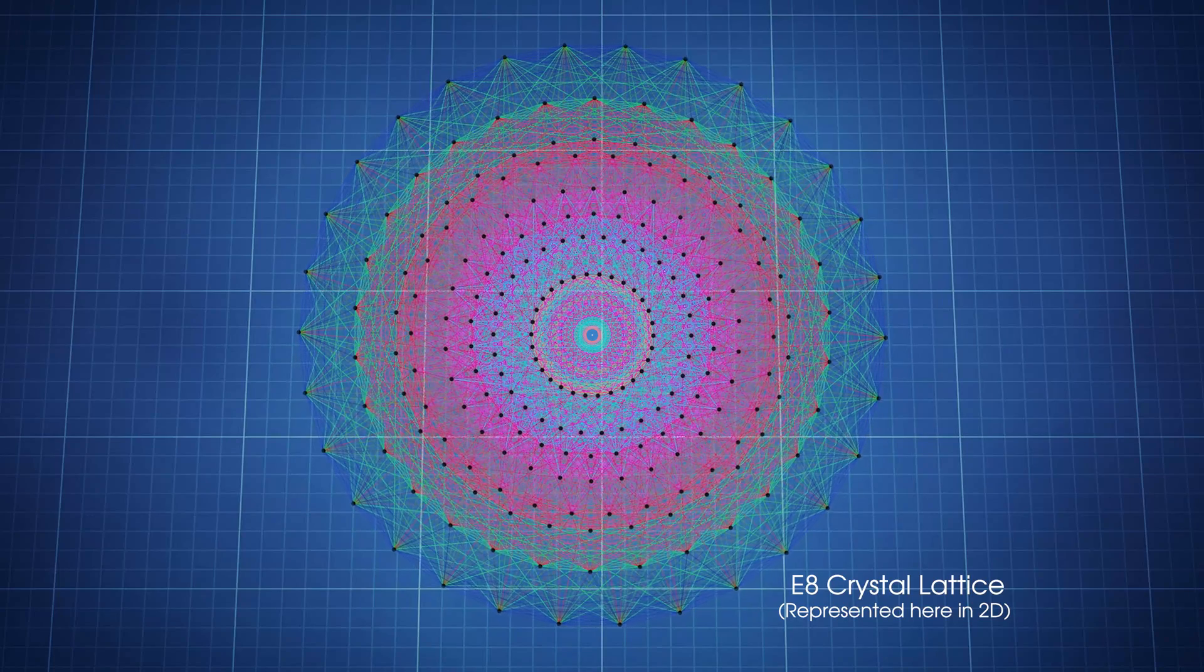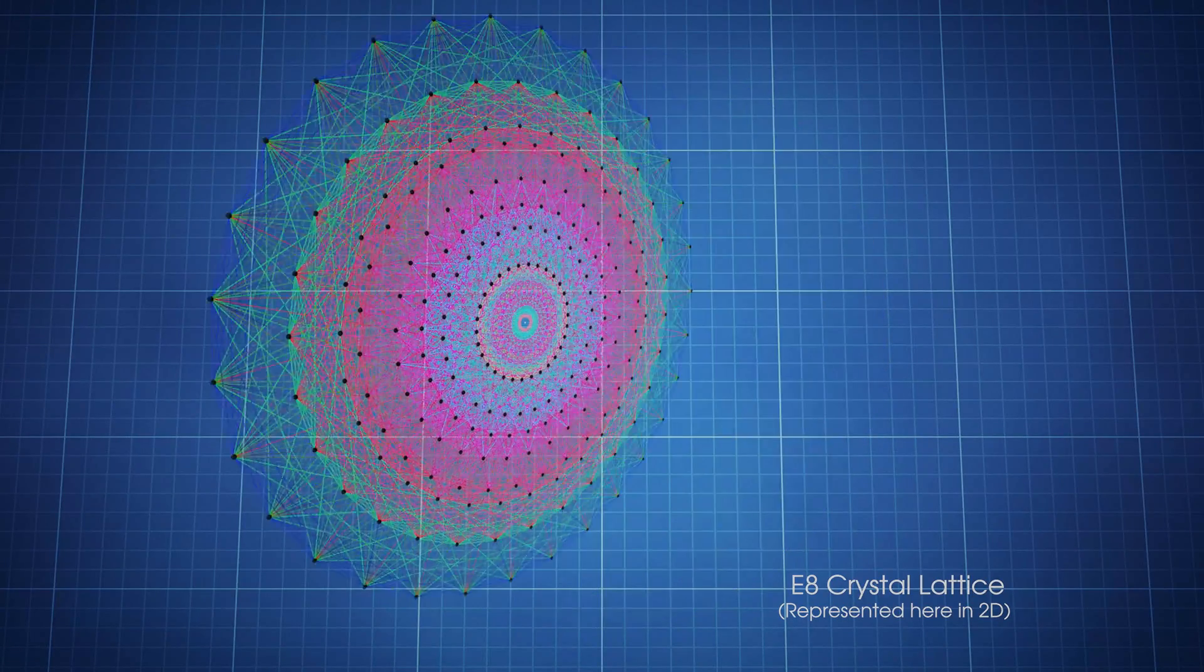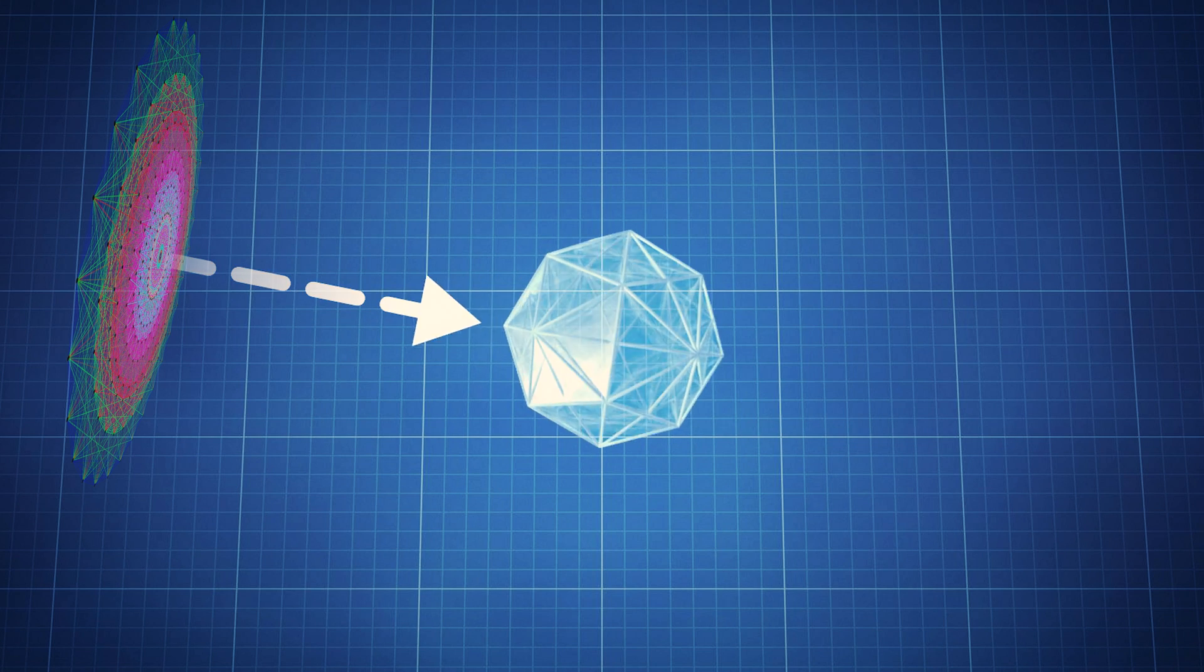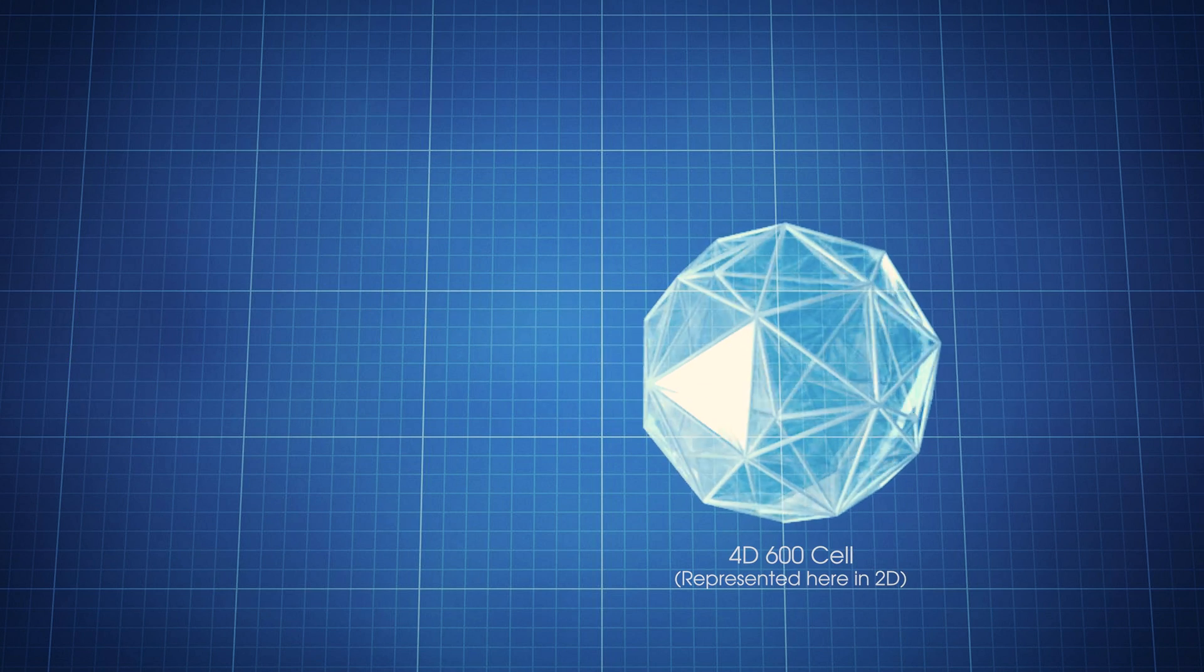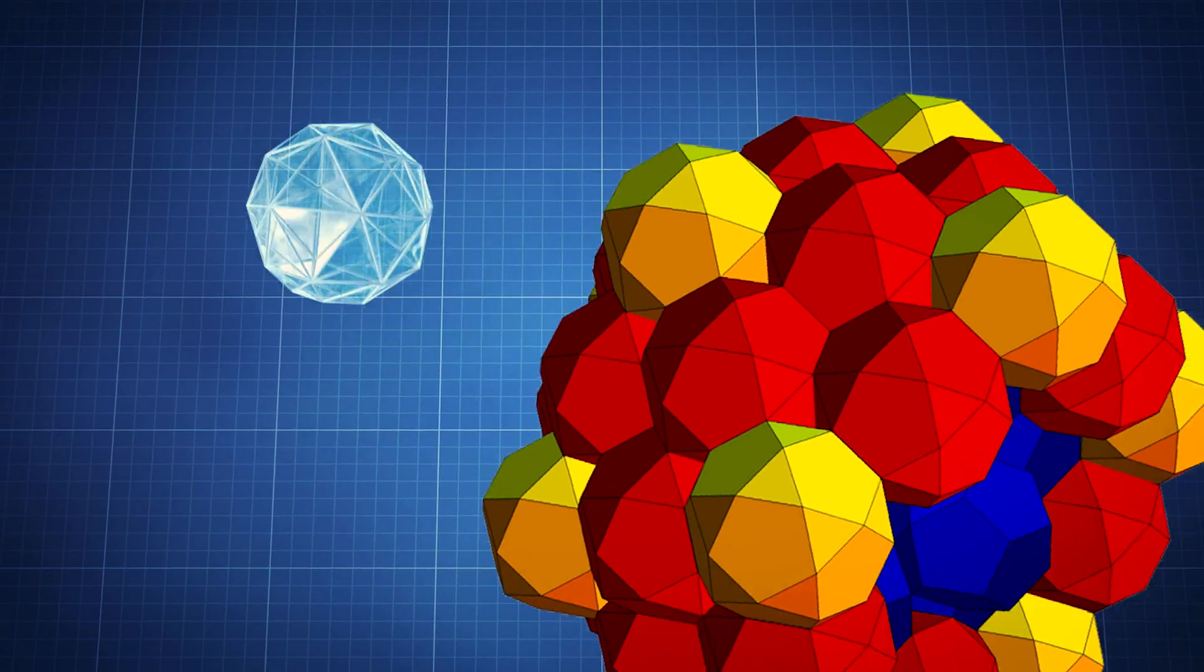So we take this very special lattice in eight dimensions and we take a slice of it and project it to four dimensions, where we get a quasicrystal that is made entirely of regular 3D tetrahedra.